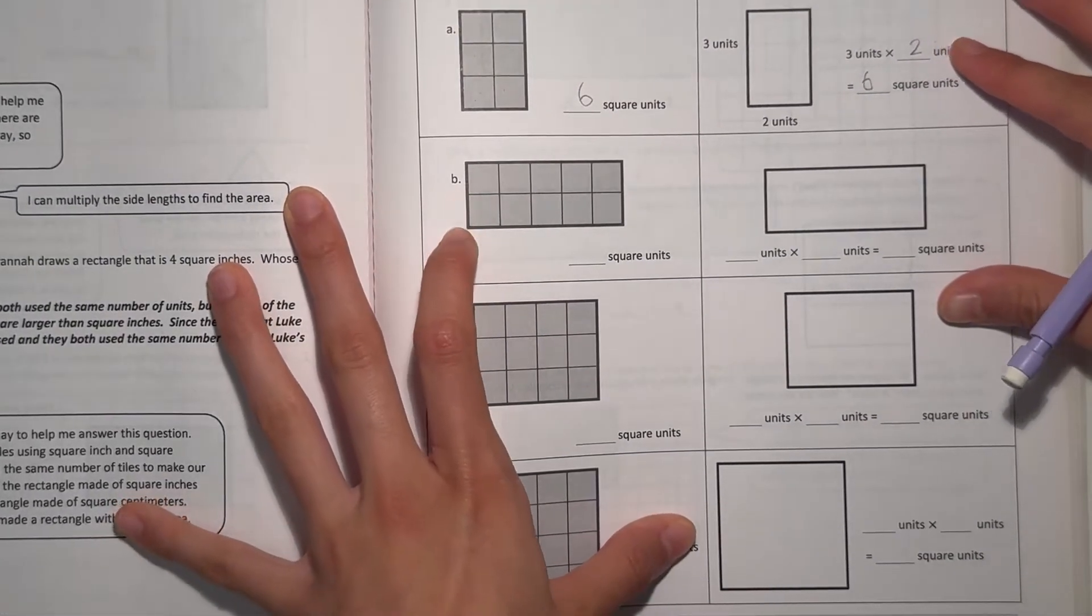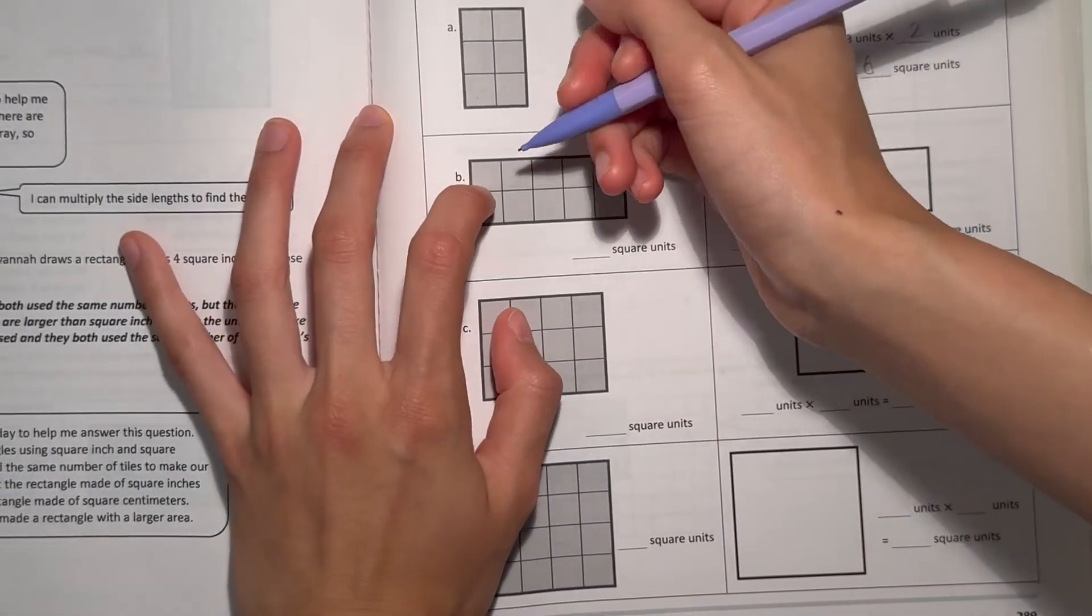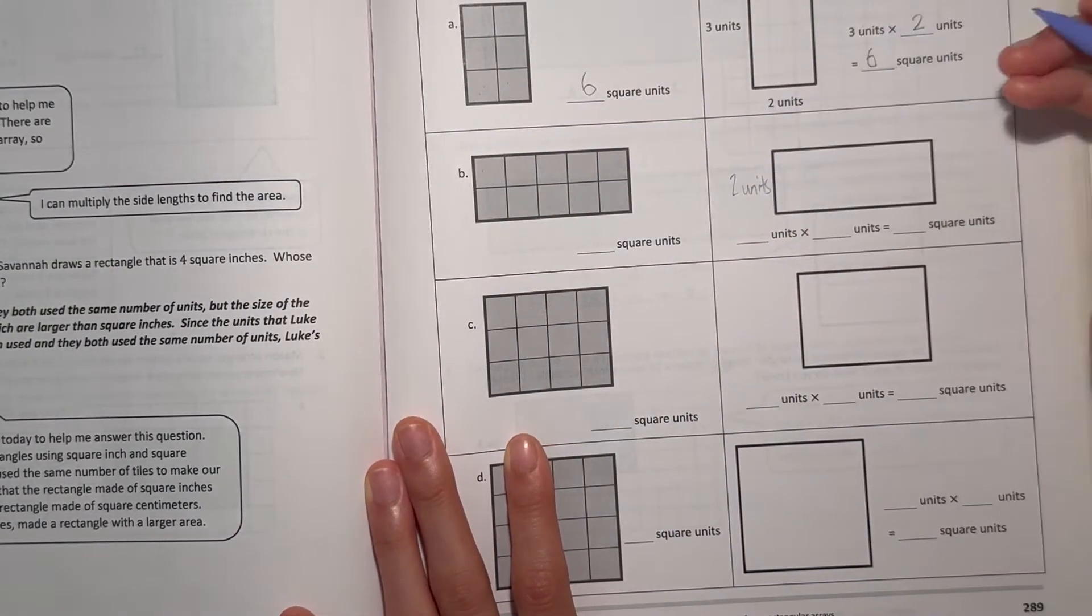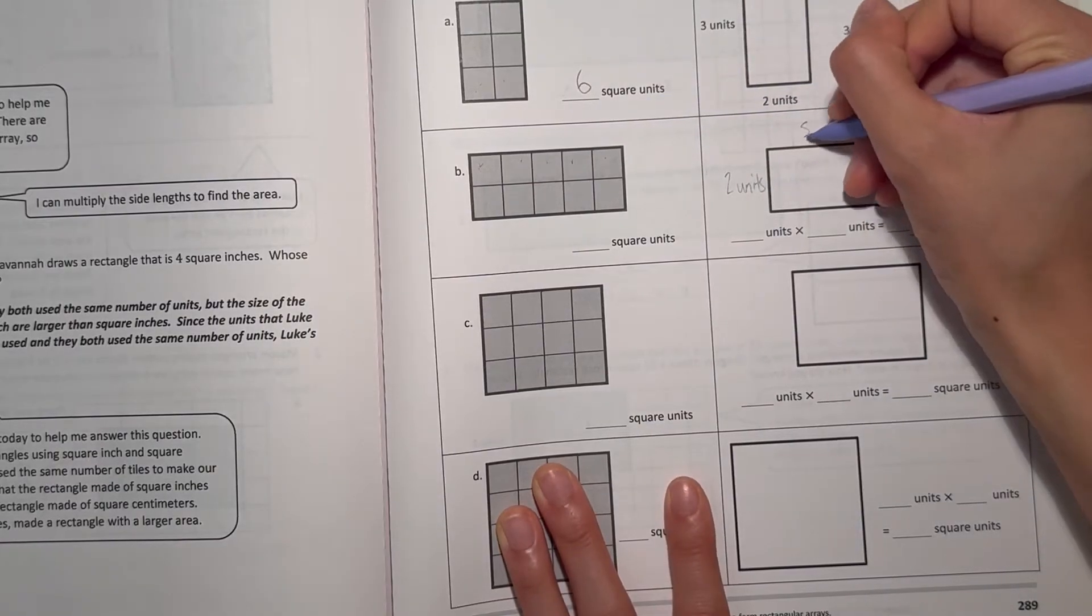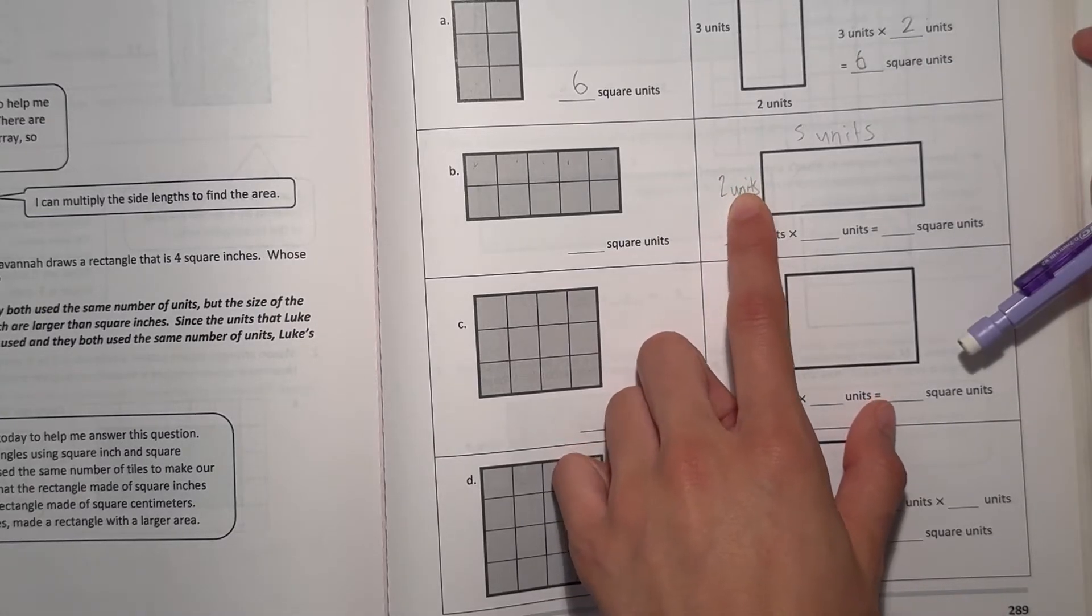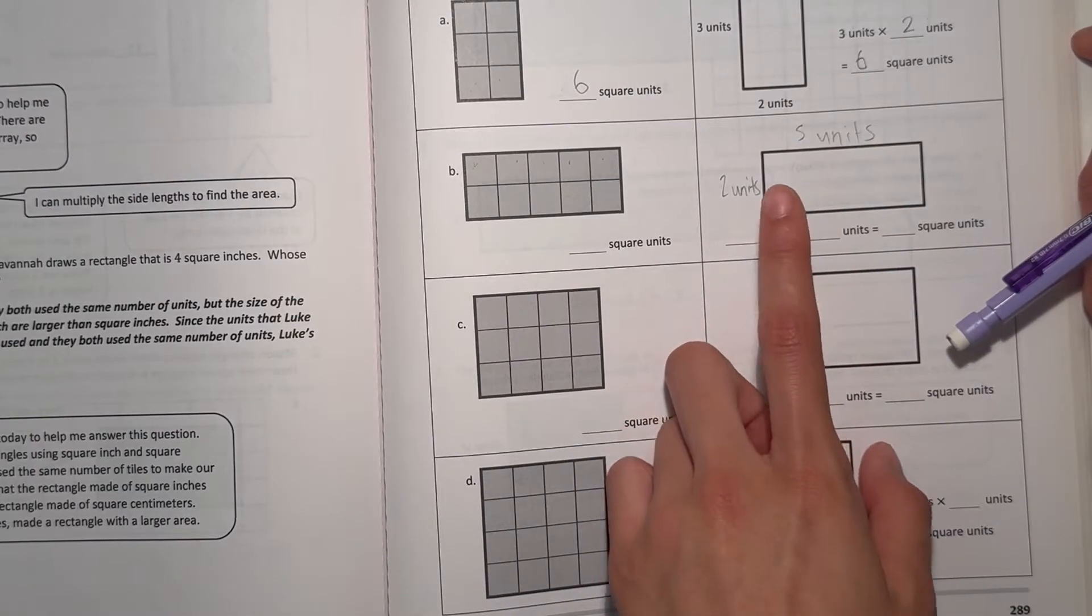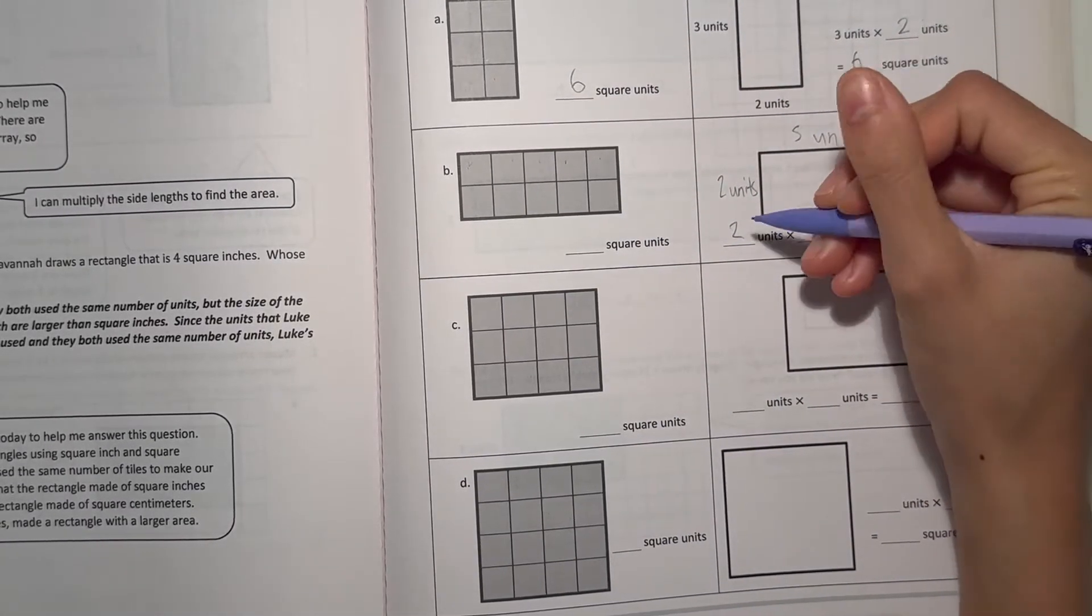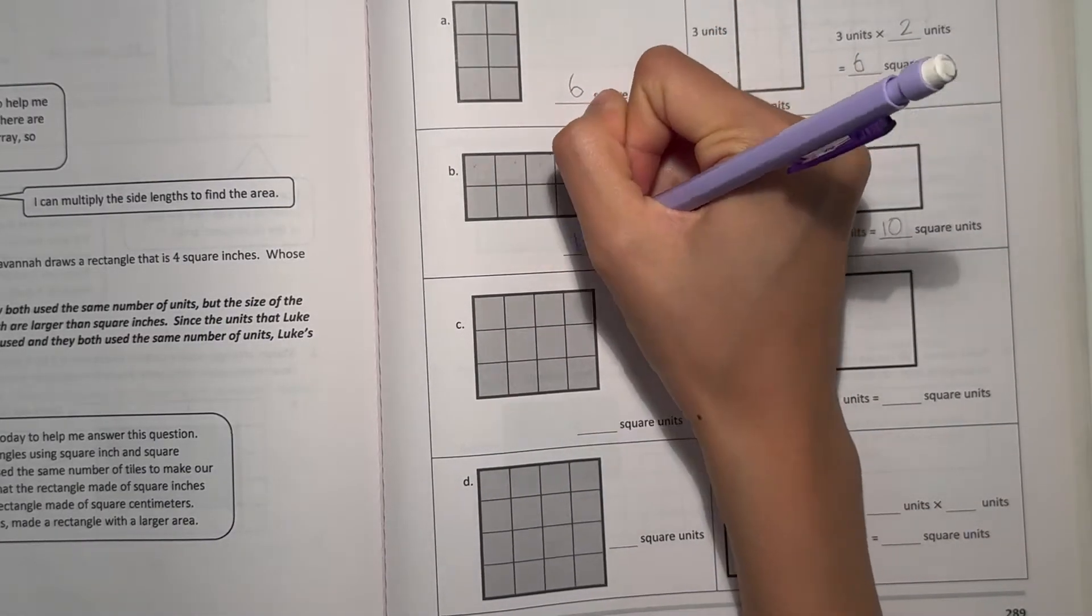Alright, let's move on to B. Here we have, we can use this one to count how many units we have. We have 1, 2 units on the sides. And then we have 1, 2, 3, 4, 5, 5 units as our width. And also, if this side is 2 units, then the opposite side over here would also be 2 units. If this is 5 units, then this side would also be 5 units. So let's find our area. 2 units times 5 units equals 2 times 5 is 10 square units.